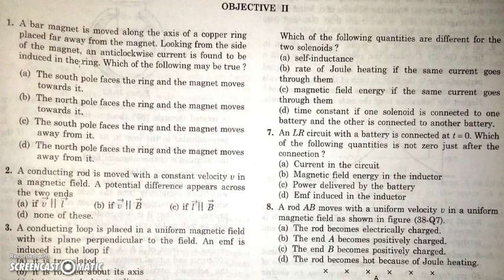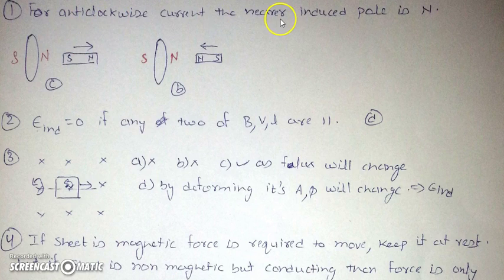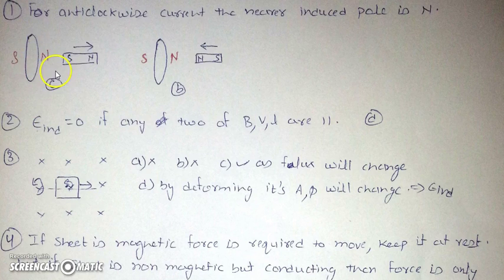As the induced current is anti-clockwise while looking from the magnet, the nearer induced pole must be north — because if the nearer induced pole is north the induced current is anti-clockwise, and if it is south the current will be clockwise. So for anti-clockwise current the nearer induced pole is north, meaning south pole is moving away from the loop or north pole is moving towards the loop. So C and B are the two possible cases.